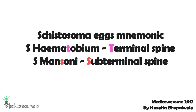The trick to remember: Schistosoma mansoni — 'S' stands for sub-terminal spine, so mansoni's ova have a sub-terminal spine. Versus Schistosoma hematobium — 'T' stands for terminal spine, so the ova of Schistosoma hematobium have a terminal spine. That's how you differentiate between mansoni and hematobium on the basis of the ova.